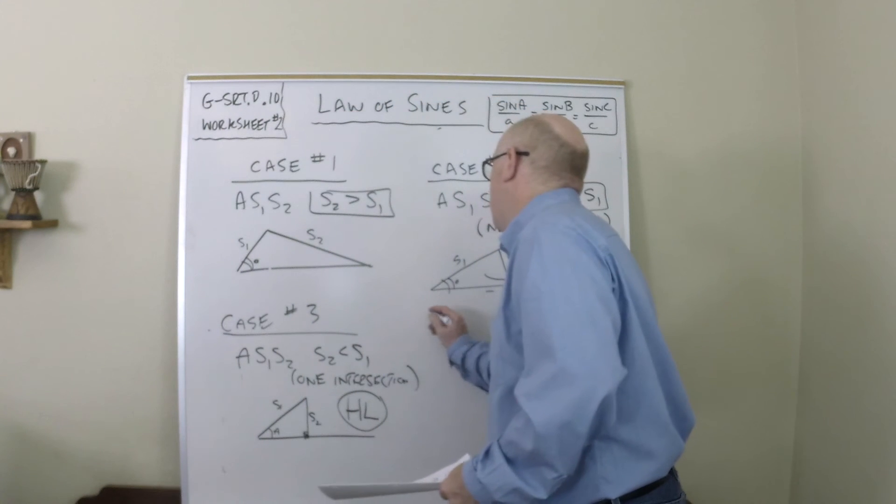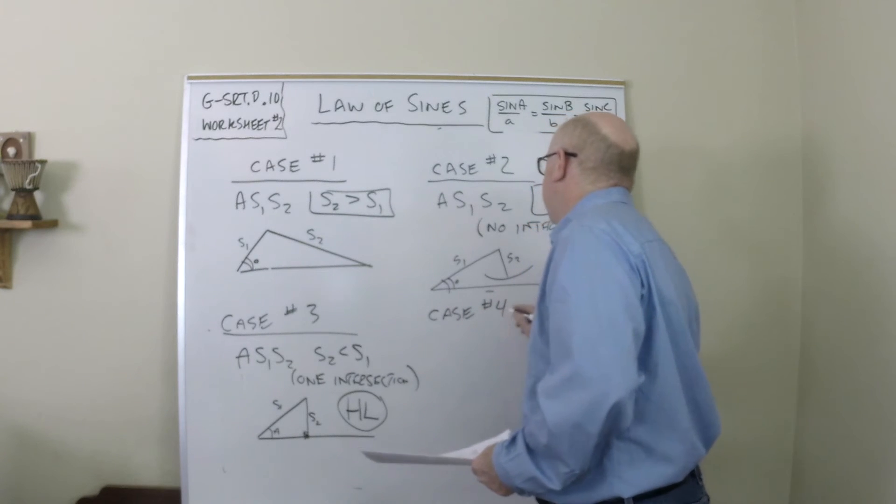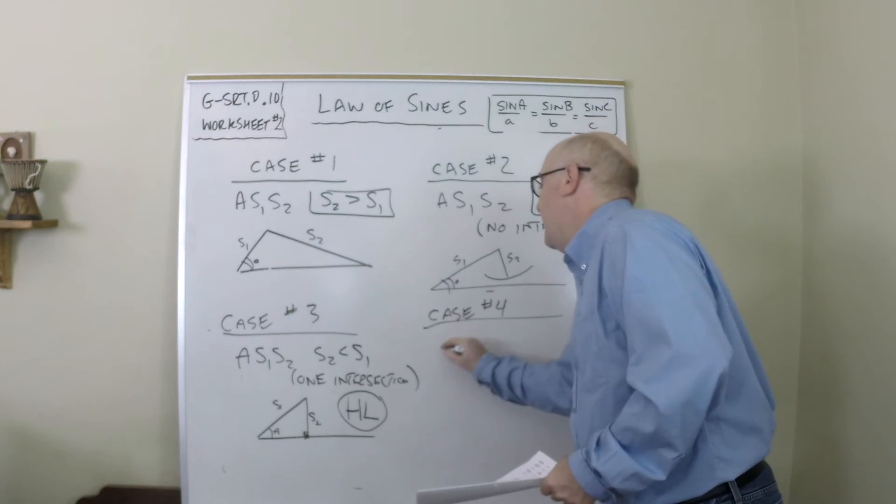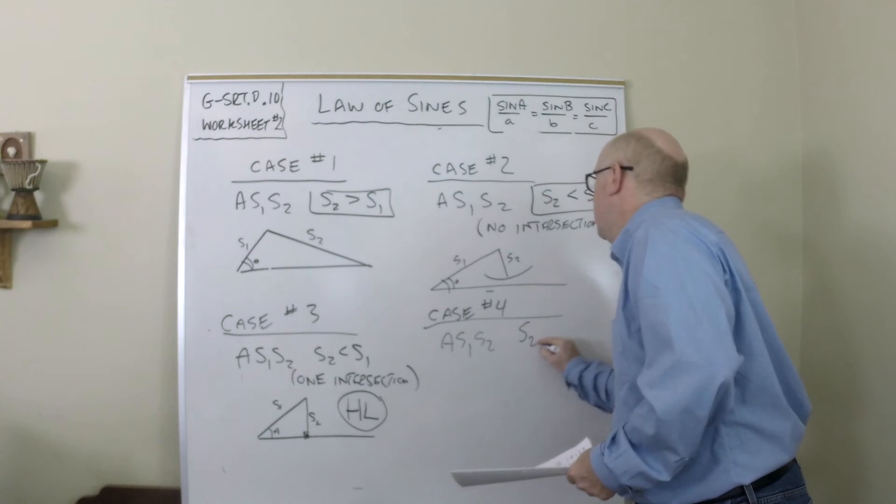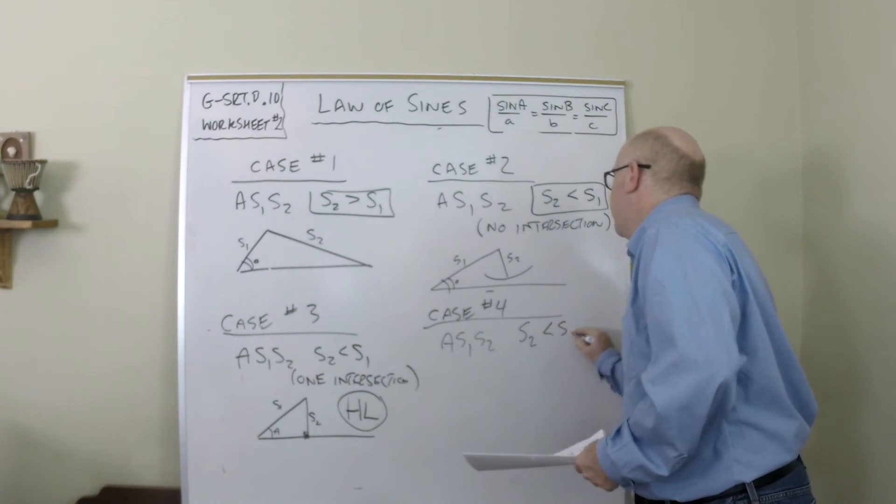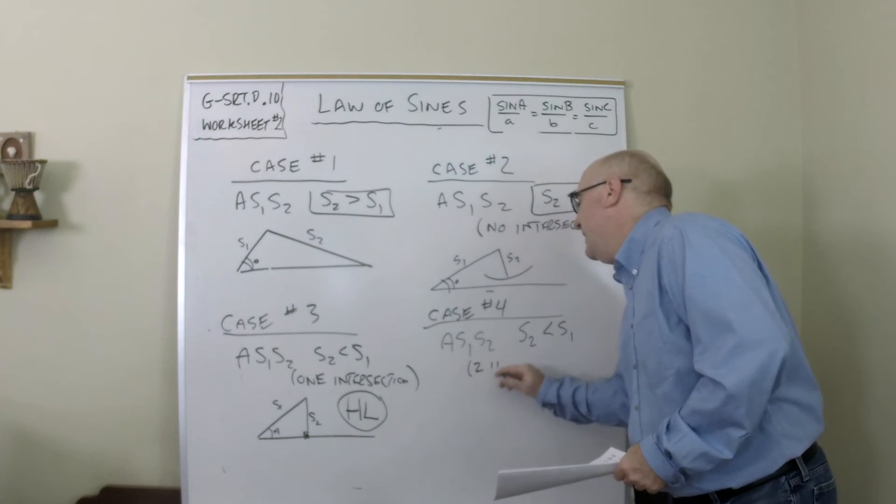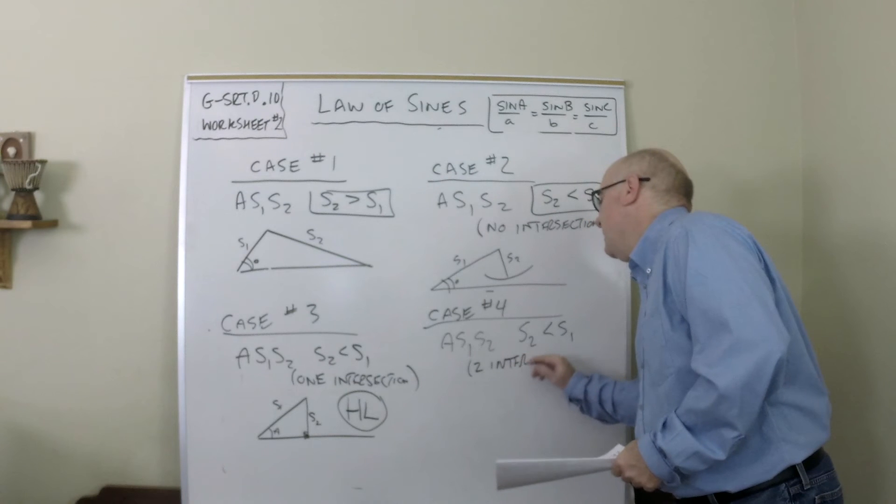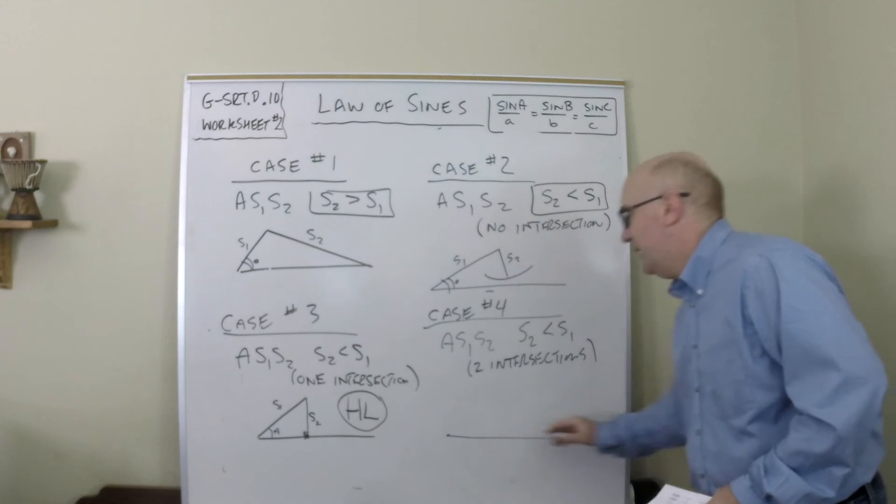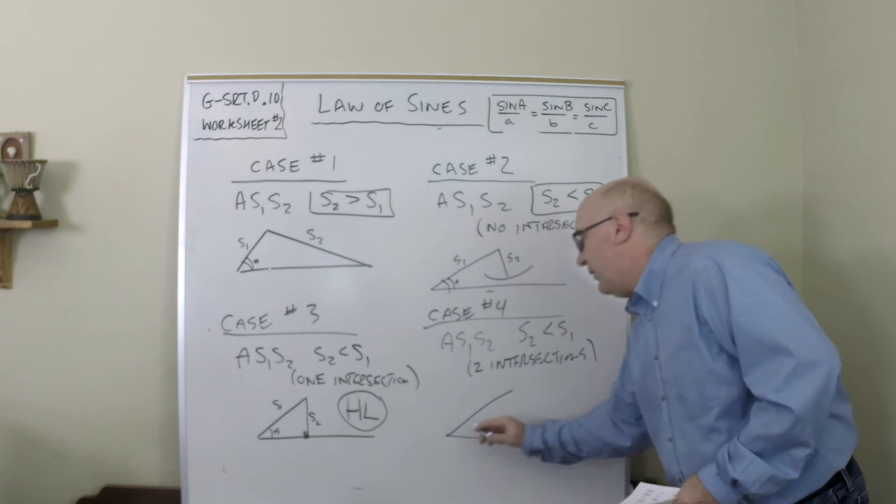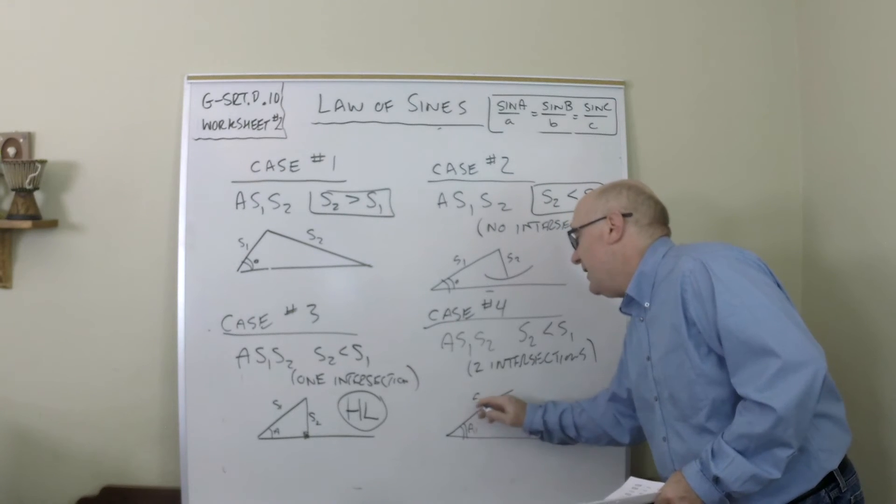The last one, the trickiest one of the group, is when you have angle side side where side 2 is shorter than side 1, again, and you get two intersections. Now how can you get two intersections? Well, here's the idea. That angle goes off. Here's that angle we've been looking at. Here's side 1.